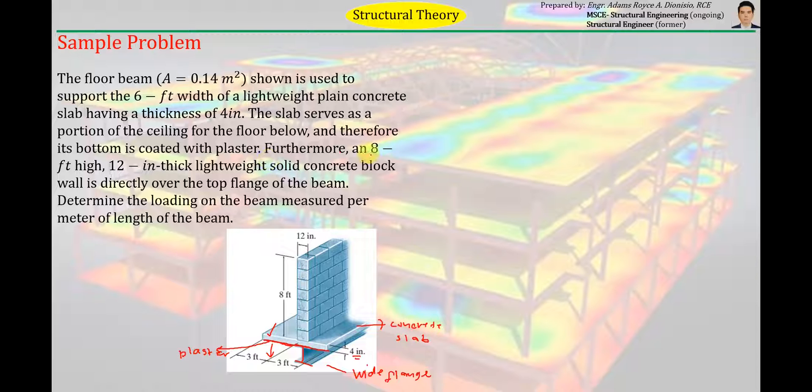Furthermore, an 8 feet high, 12 inch thick lightweight solid concrete block wall is directly over the top flange of the beam. So in addition to the concrete slab and the plaster and the weight of the wide flange itself, in addition to those loads, the floor beam also supports this block wall here. With dimensions as shown. Block wall. 8 feet high, tapos 12 inch thick.